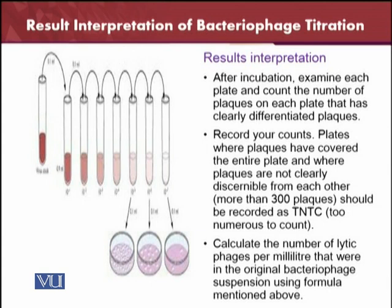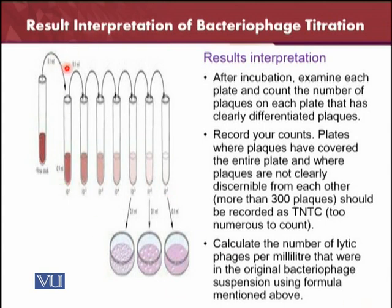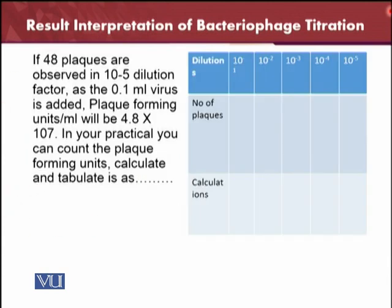After the counting, calculate the number of lytic phages per ml that were in the original bacteriophage suspension using the formula which has already been mentioned. Here you can see the different dilutions — 10 raised to the power 4, 5, and 6 — and the corresponding plates. Dilutions on the right are less concentrated. The 0.1 ml of inoculum is the standard volume used in every tube. Here is a table you can use for your own experiment, applying the given formula to calculate your own results.